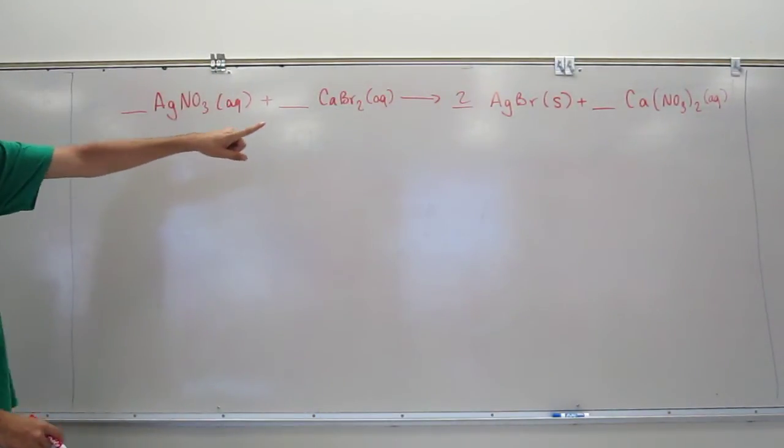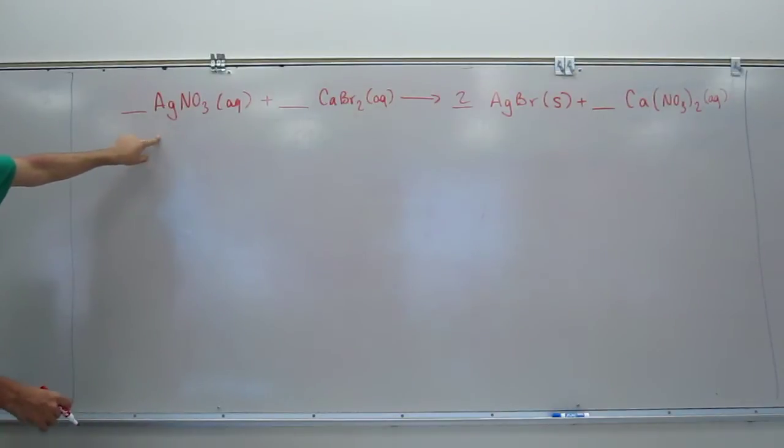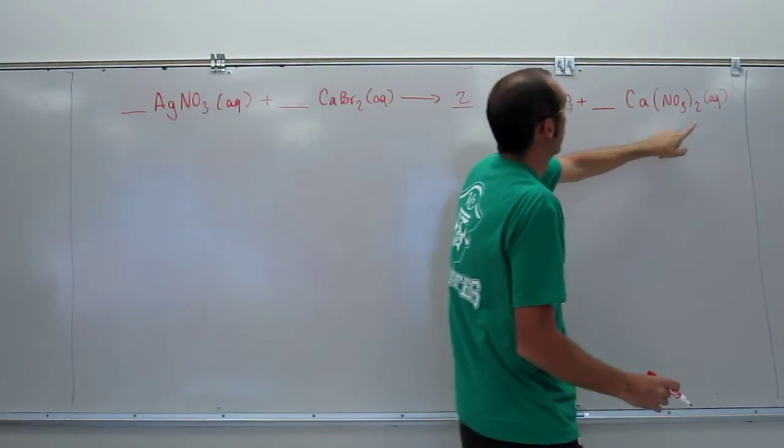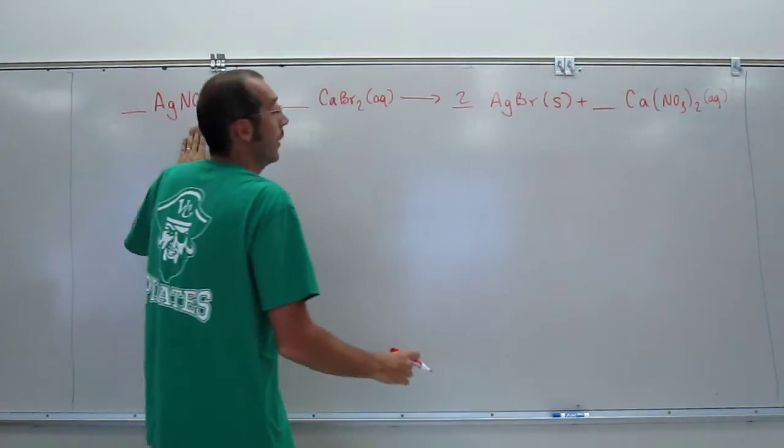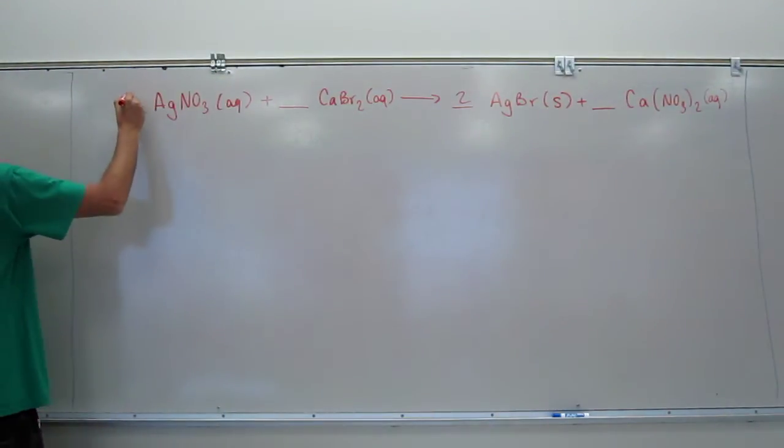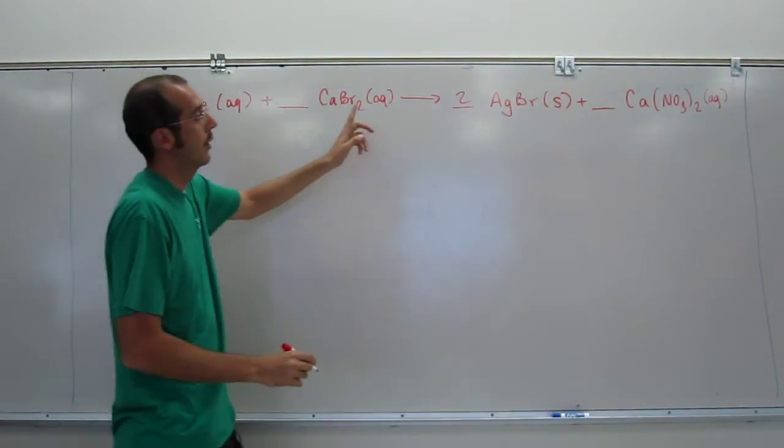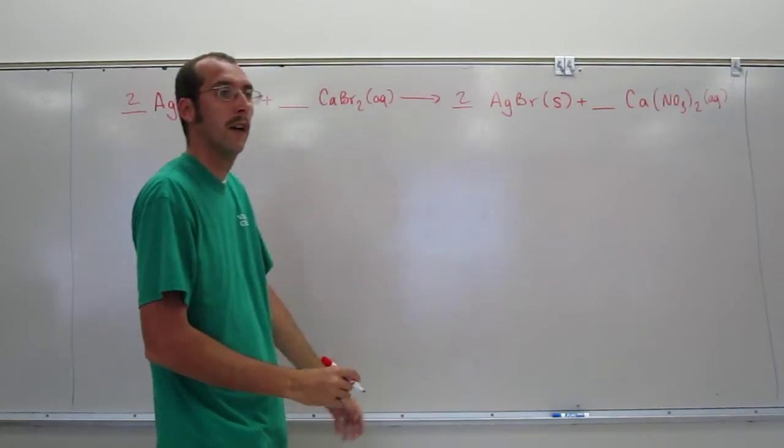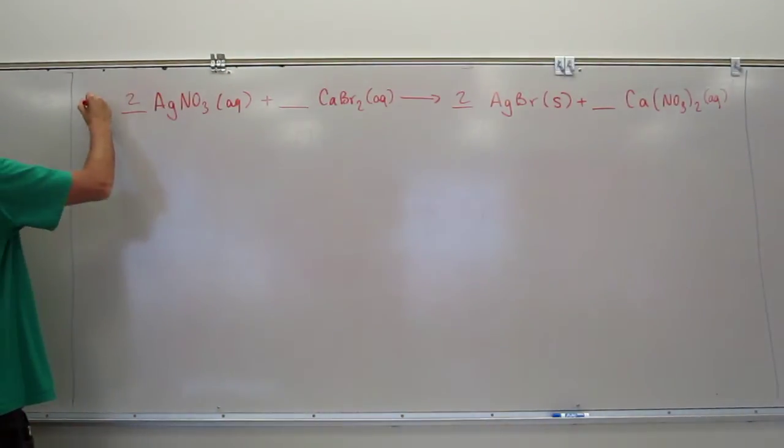Now we've got two silvers there, not there, right? But we've got two nitrates over here and not here, right? So all we've got to do is put two there and then one calcium, one calcium, we're cool, right? Okay, so that's the molecular equation right there.